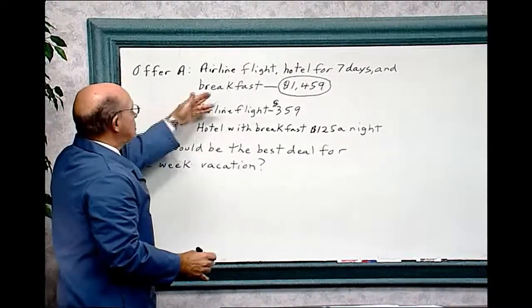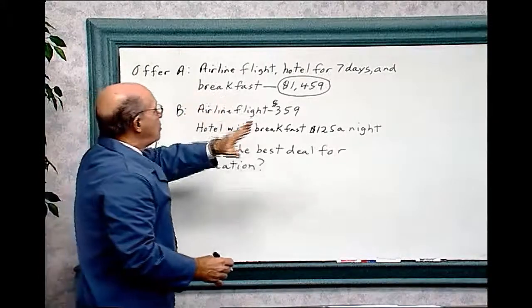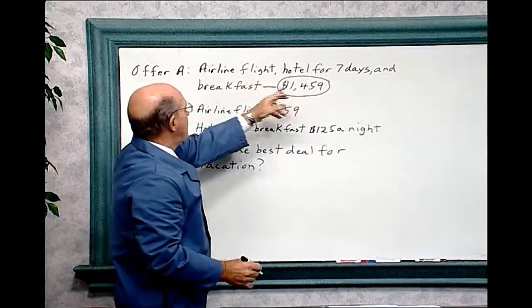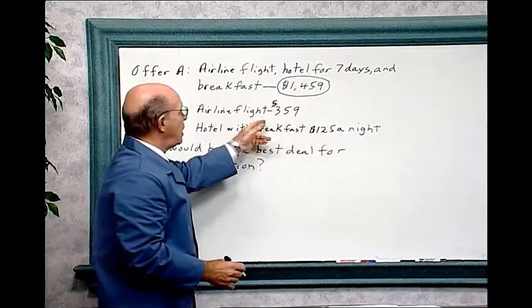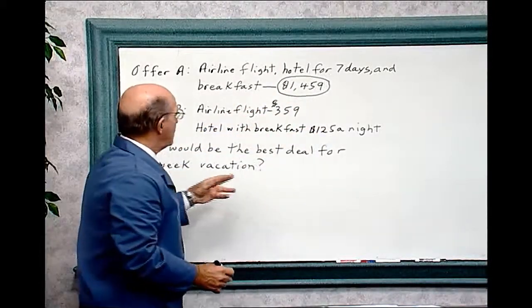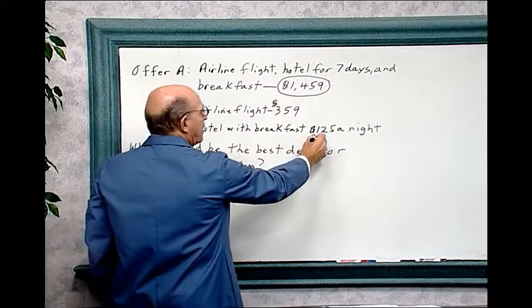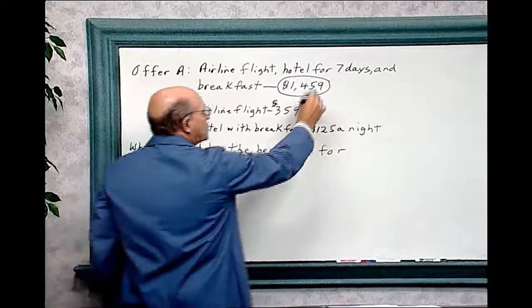This we have to do the math. This has all the math in it. The whole cost for airline flight, hotel for seven days, and breakfast is $1,459. Here we have to do some math. The first thing we're going to do is, hotel with breakfast is $125 a night for seven days, so we have to add